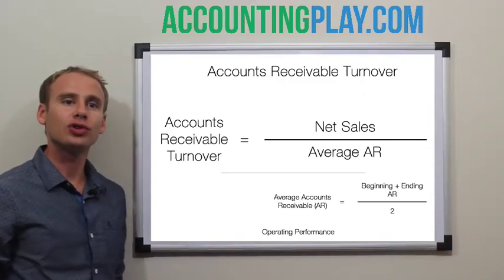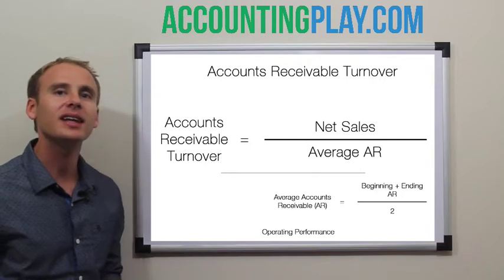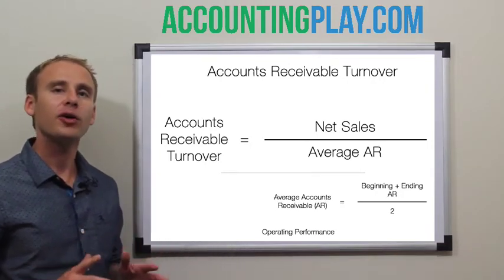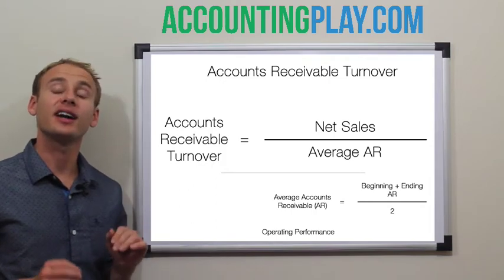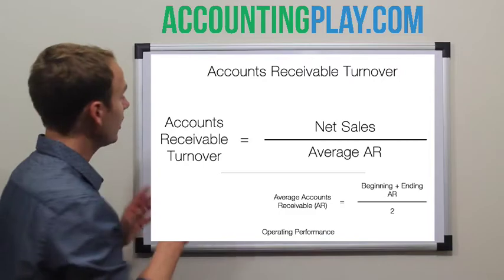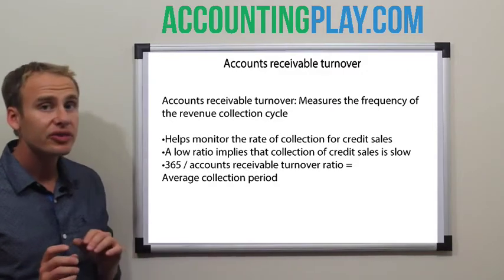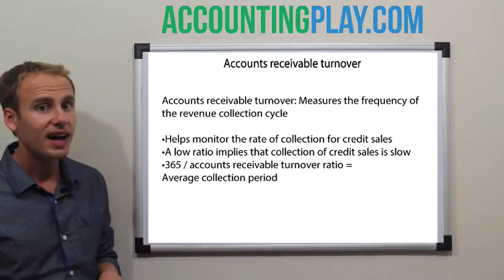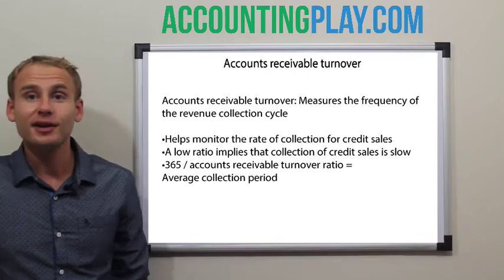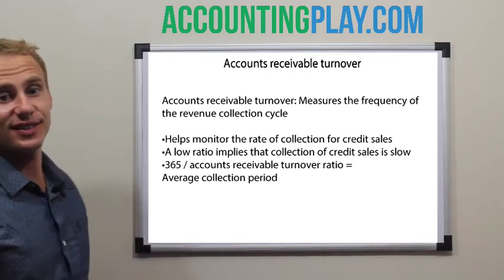Accounts Receivable Turnover measures the frequency of the revenue collection cycle. This helps monitor the rate of collection for credit sales. A low ratio implies that collection of credit sales is slow, and a high ratio will indicate that collection is fast.